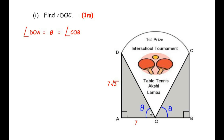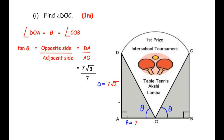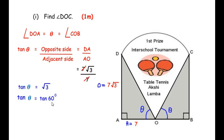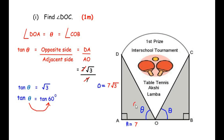Let us find the value of theta using a trigonometric ratio. We use tan because we have the opposite side DA = 7√3 and the adjacent side AO = 7. So tan θ = opposite/adjacent = 7√3 / 7 = √3. Since tan 60° = √3, the value of theta is 60 degrees.